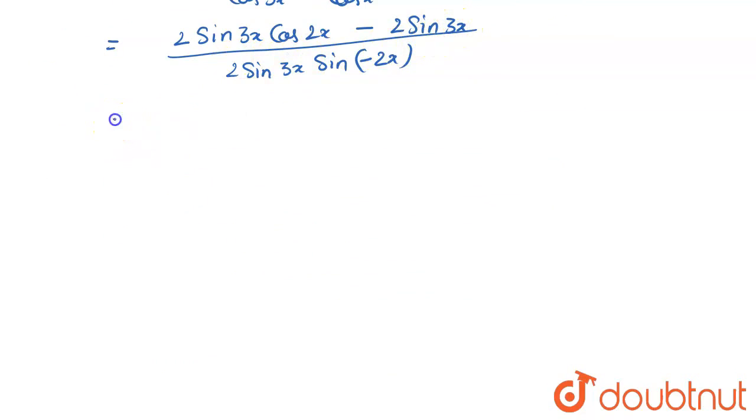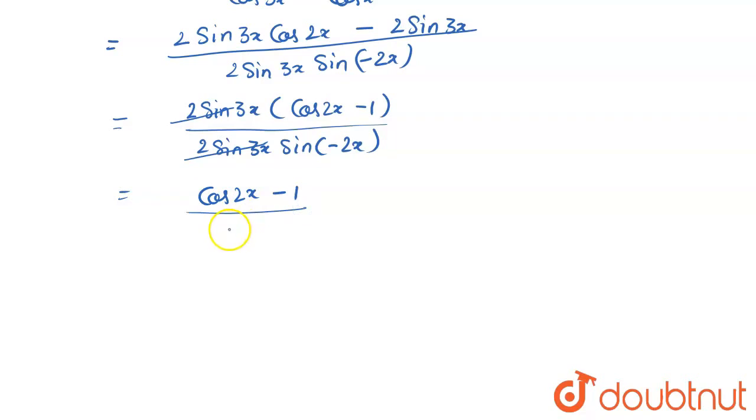If you notice I can take 2 sin 3x common and then I can cancel this term because I have it in denominator as well. So I can write it as twice sin 3x common and it becomes cos 2x minus 1. And the denominator I have 2 sin 3x sin of minus 2x. This entire term cancels out and I am left with cos 2x minus 1 divided by sin of minus 2x. On the right hand side I have to prove that it is tan x, so I am going to need sin in the numerator and cos in the denominator.